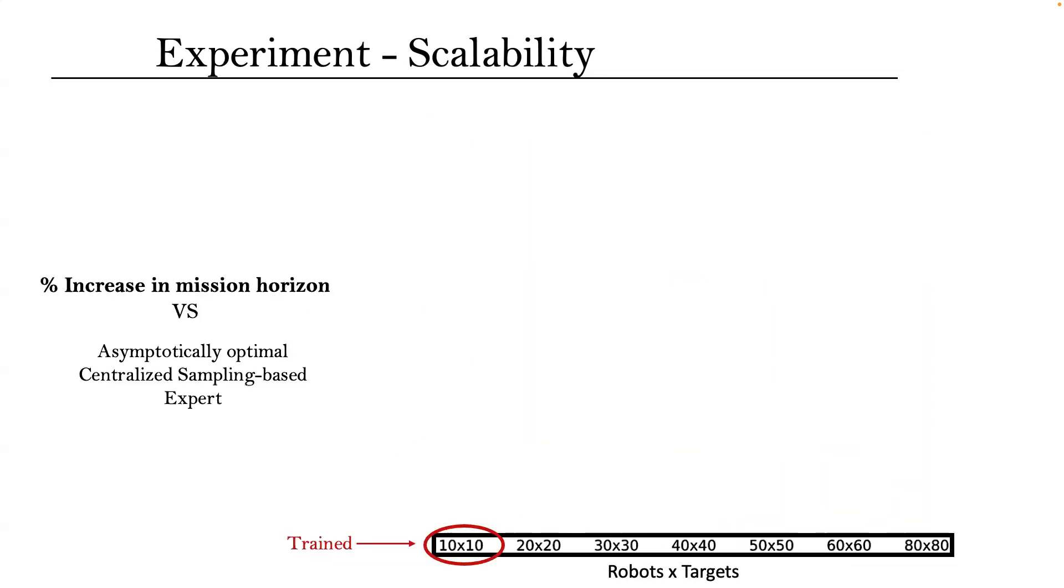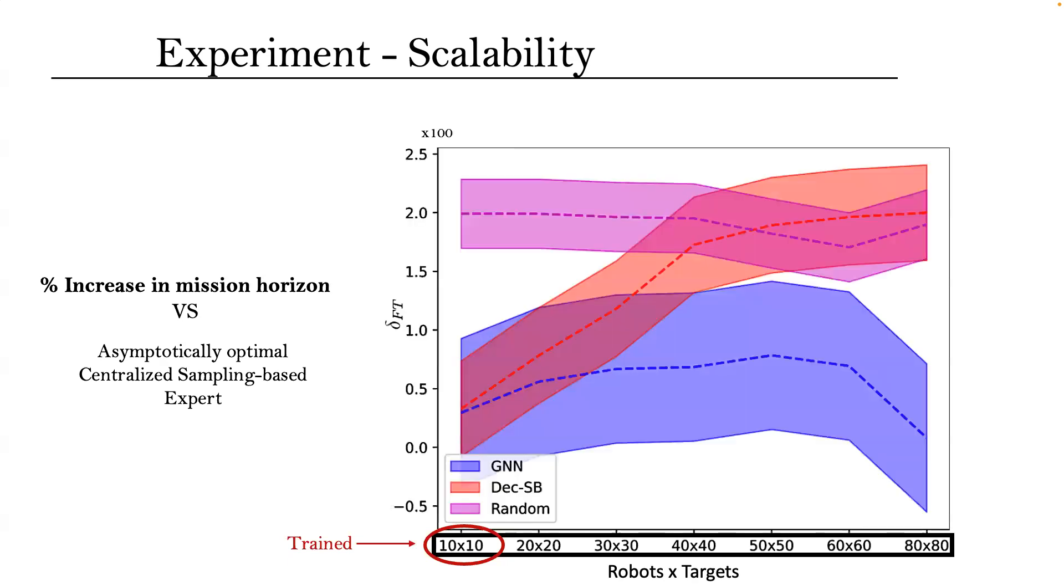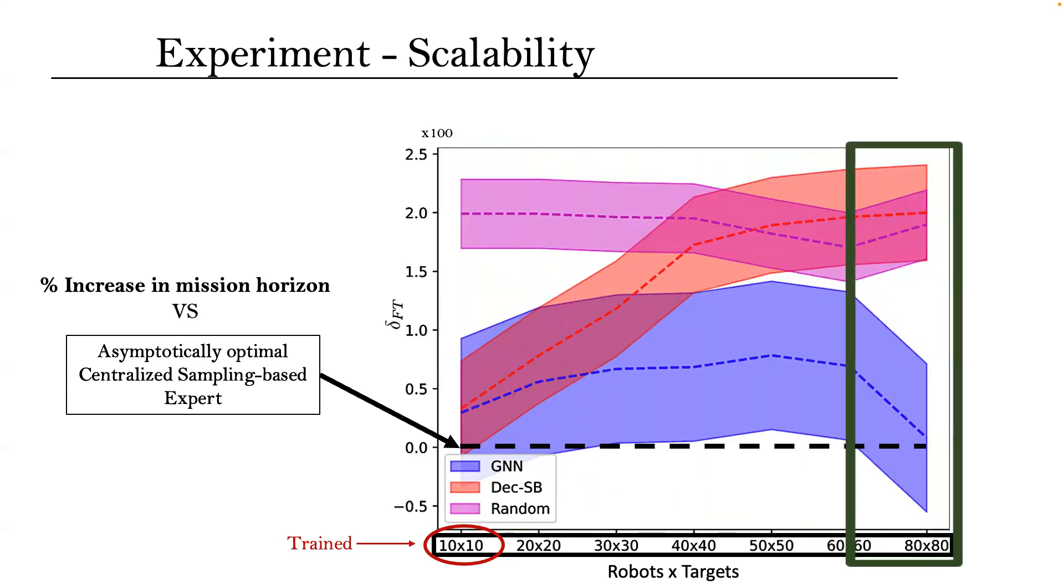To demonstrate IGBN's efficacy in growing problems, we further compare the percentage of increase in planning horizon when measured against the asymptotically optimal centralized expert. In the 10 robots, 10 target setup that IGBN was trained on, it performs similarly to the centralized sample-based algorithm. However, when we vastly scale the problem, the IGBN consistently produces near-optimal paths and even outperforms the centralized expert occasionally.